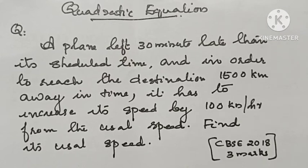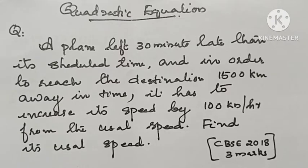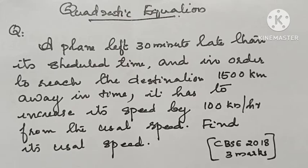A plane left 30 minutes late than its scheduled time and in order to reach the destination 1,500 km away in time, it has to increase its speed by 100 km per hour from the usual speed.